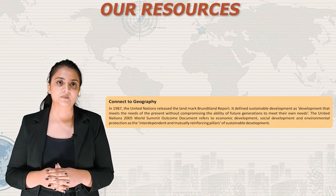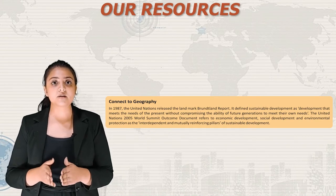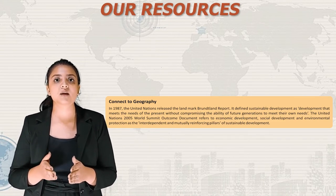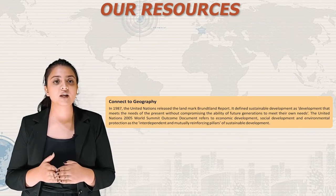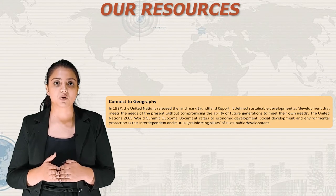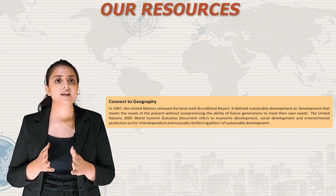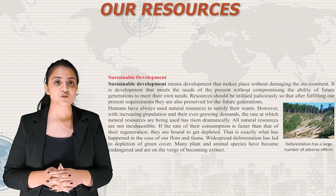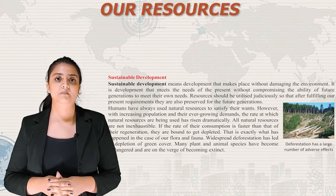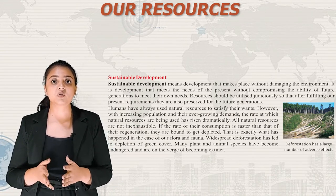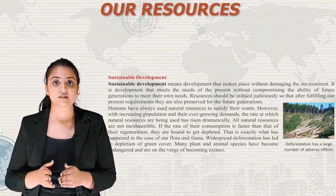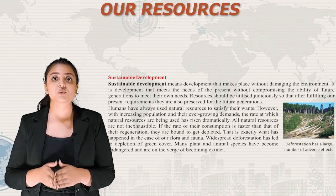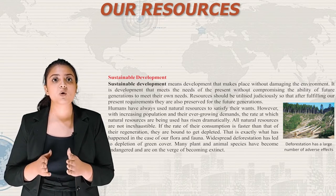In 1987, the United Nations released the landmark Brundtland Report, which defined sustainable development as development that meets the needs of the present without compromising the ability of future generations to meet their own needs. The UN 2005 World Summit outcome document refers to economic development, social development and environmental protection as the interdependent and mutually reinforcing pillars of sustainable development. Resources should be utilized judicially so that after fulfilling our present requirements, they are also preserved for future generations.